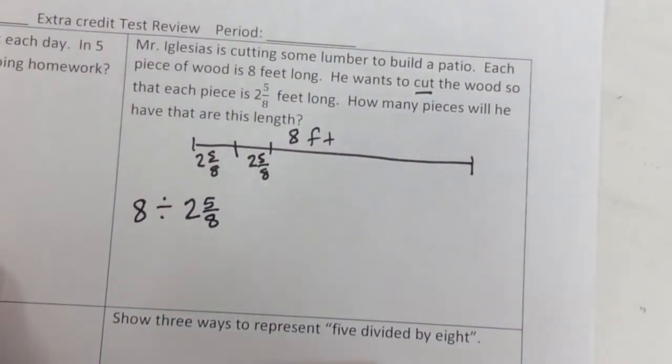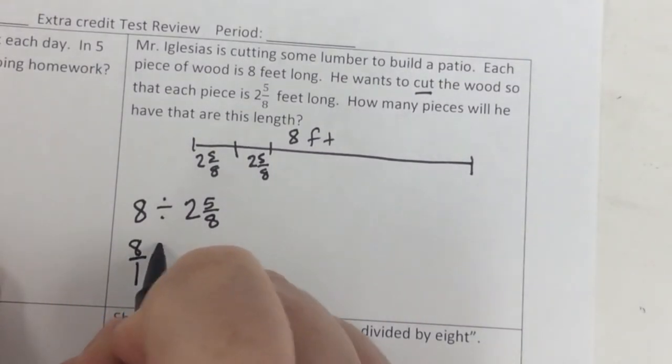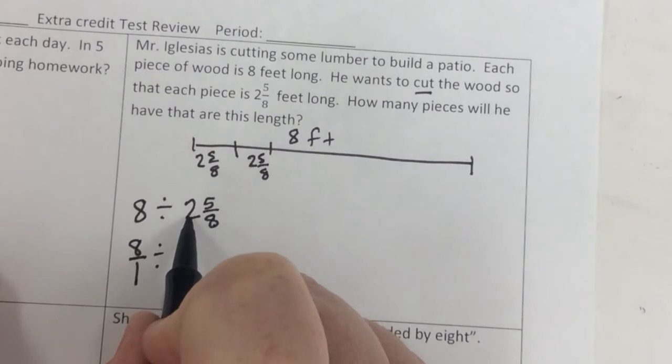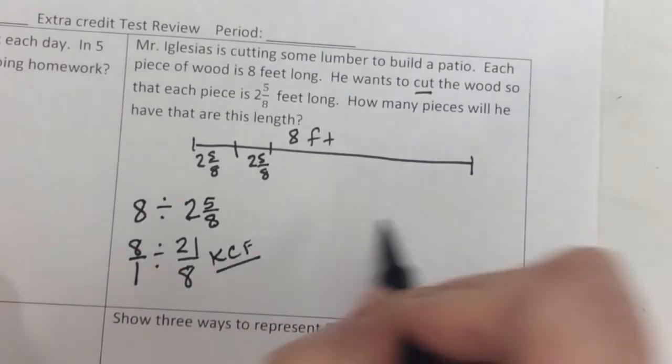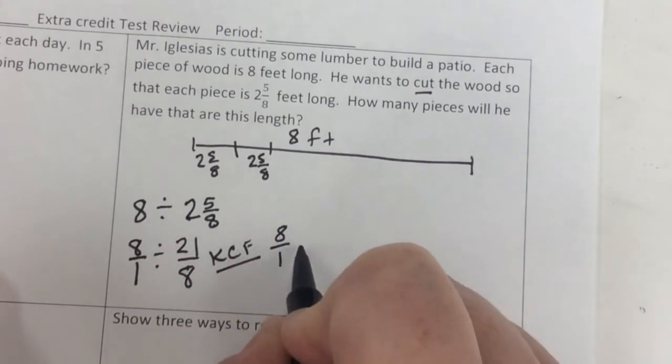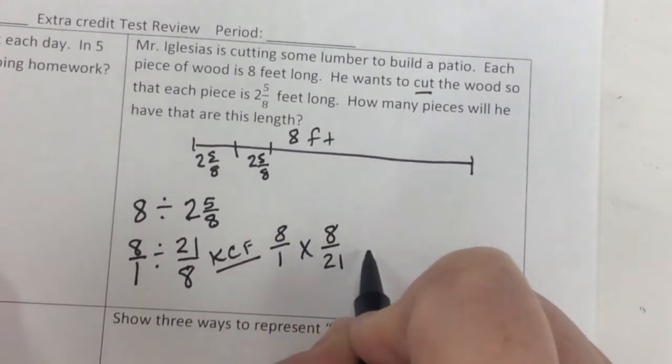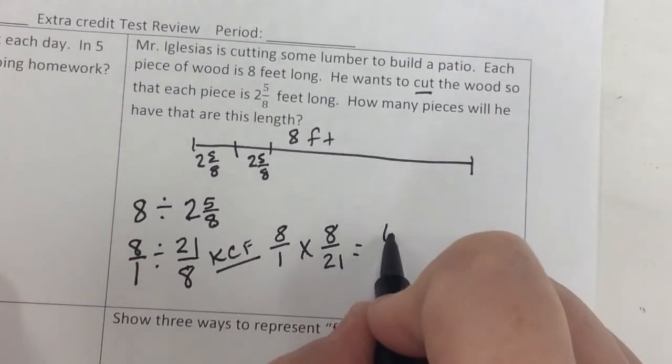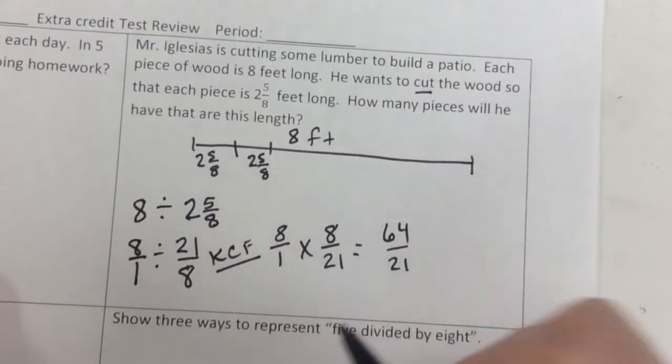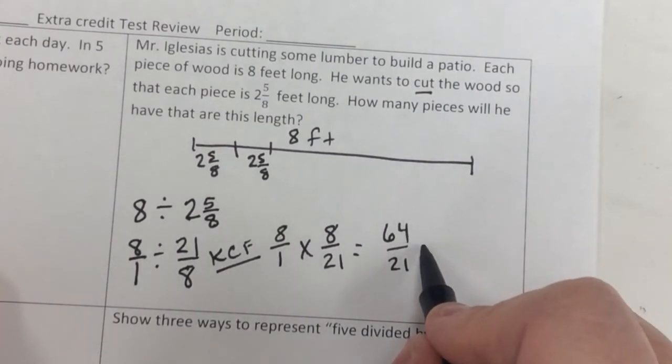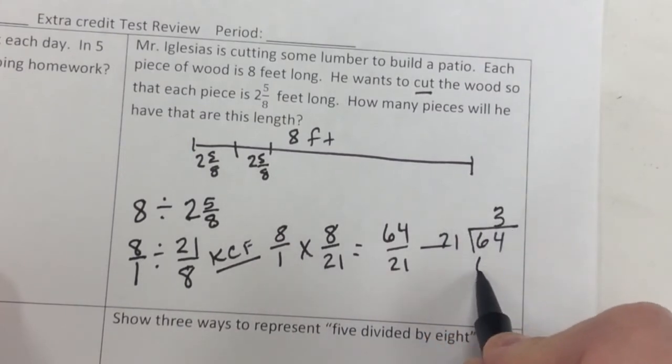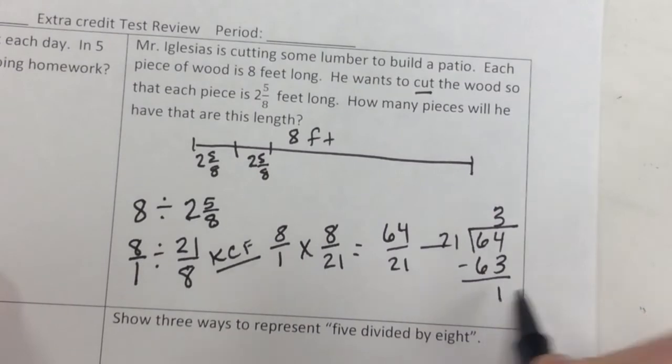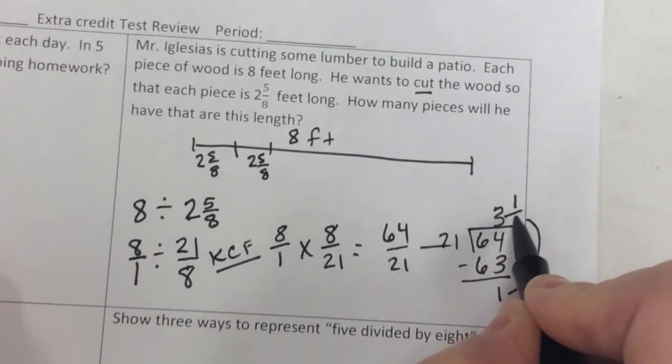No whole numbers. No mixed numbers. So 8/1 divided by. Now, 8 times 2 is 16 plus 5 is 21/8. Now, I do keep, change, flip. 8/1 times 8/21. Now, it's a multiplication problem. You're going to get 64/21. And you're going to have to divide. You cannot leave it. So 64 divided by 21. 21 times 3 would be 63. And you have 1 left over. So it's 3 and 1/21.